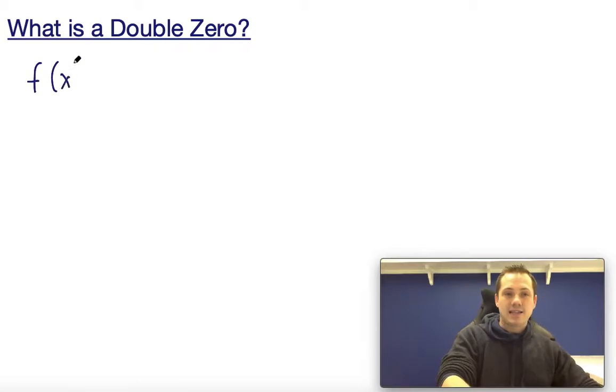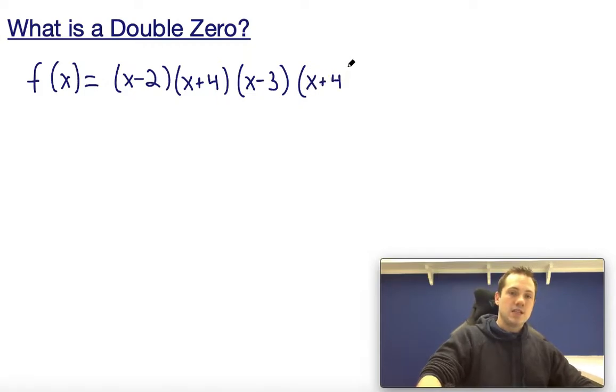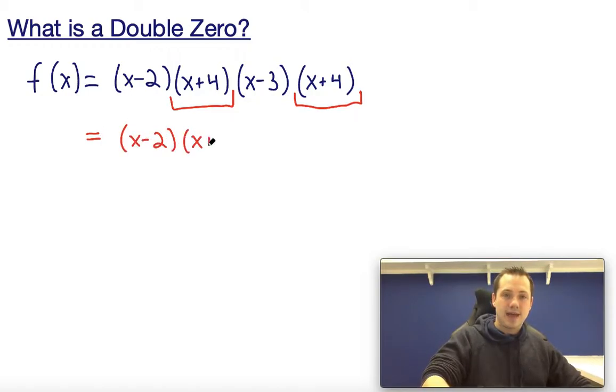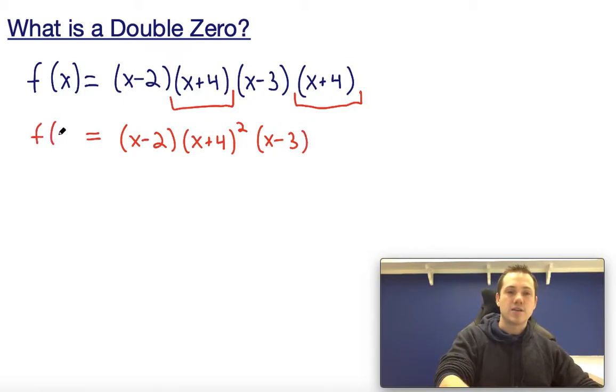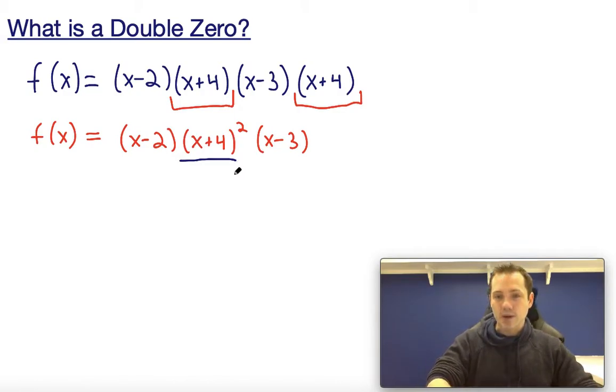Let's say we have the function f(x) = (x-2)(x+4)(x-3)(x+4). If we want to pick out which one of these is a double zero, we just have to look at the one that appears twice. In this case, that's going to be (x+4) times (x+4). Now, you probably also know that anything multiplied by itself can just be written as that quantity squared. So rather than seeing it presented the way you do in the top equation, you're more likely to see it in this form in red.